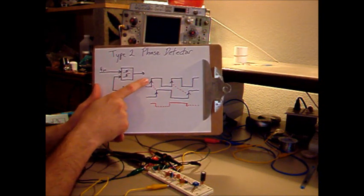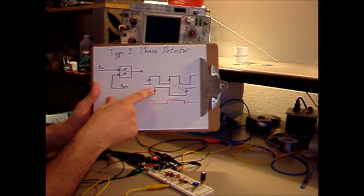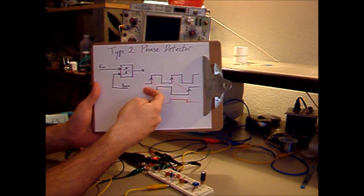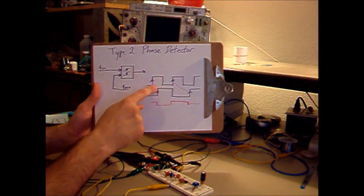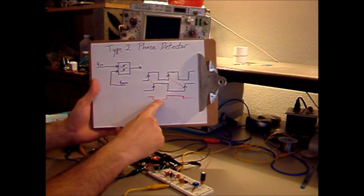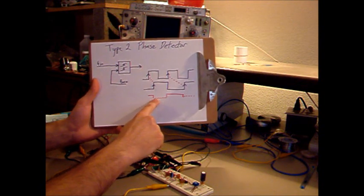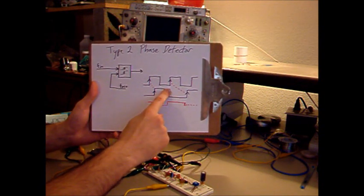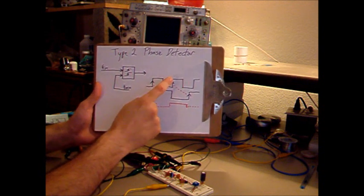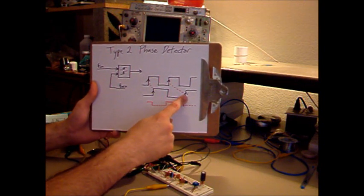The phase detector says: here's the input positive edge — it watches for the VCO positive edge, and while waiting, it outputs a positive error signal to speed the VCO up and bring its edge closer. Once it sees the second positive edge, it doesn't go low like in type 1, but goes into a high impedance state where it won't change the control voltage at all. In this region, the VCO runs at a fixed frequency until the phase detector sees another positive edge. If it sees an input positive edge again and the VCO is late, it starts outputting positive voltage until it sees the VCO positive edge.